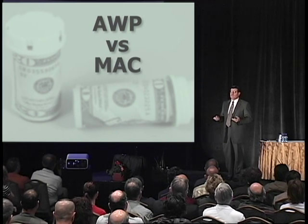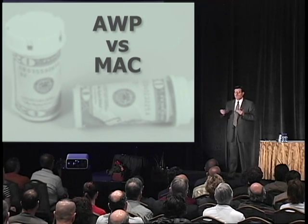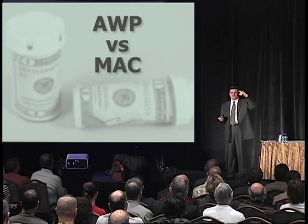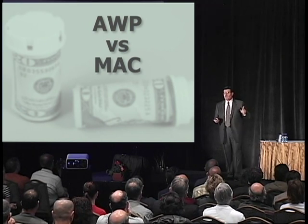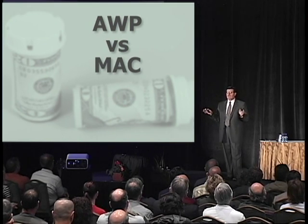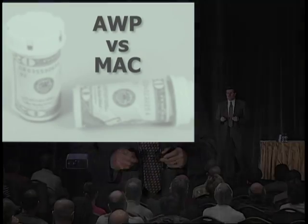So they determined to make their own list and call it maximum allowable cost. In its simplest form it means: no matter what you paid for the drug, we know about what the market is. We're going to set a number — twenty cents, thirty cents, forty cents — and that's the most we're going to pay for that drug. You go get it from any generic manufacturer you want, but we're not paying more than that number. That's how MACs work, and it's important to understand that.